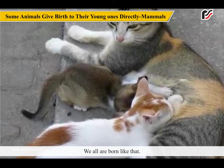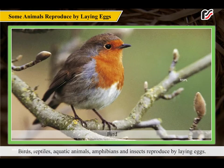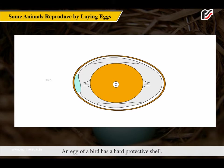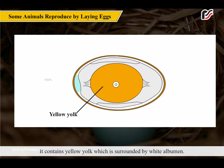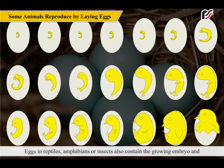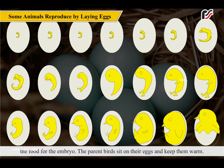We all are born like that. Birds, reptiles, aquatic animals, amphibians and insects reproduce by laying eggs. An egg of a bird has a hard protective shell. It contains yellow yolk which is surrounded by white albumin. The yolk provides nourishment to the growing chick inside the egg. Eggs of reptiles, amphibians or insects also contain the growing embryo and the food for the embryo.